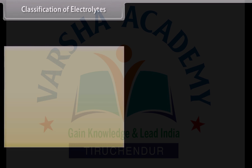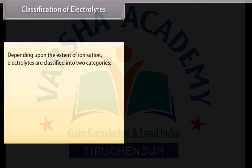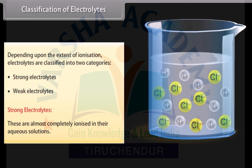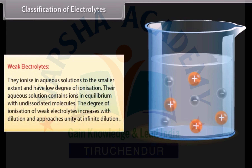Classification of electrolytes: Depending on the extent of ionization, electrolytes are classified into strong and weak electrolytes. Strong electrolytes are almost completely ionized in aqueous solutions (e.g., HCl, NaOH, KCl). Weak electrolytes ionize to a smaller extent and have a low degree of ionization; their solutions contain ions in equilibrium with undissociated molecules. The degree of ionization of weak electrolytes increases with dilution and approaches unity at infinite dilution (e.g., NH₄OH and CH₃COOH).